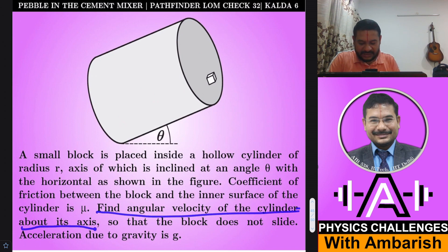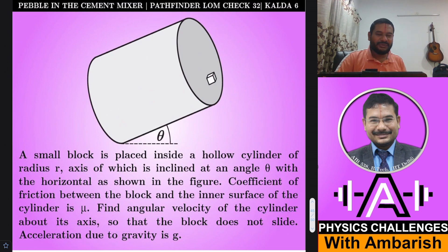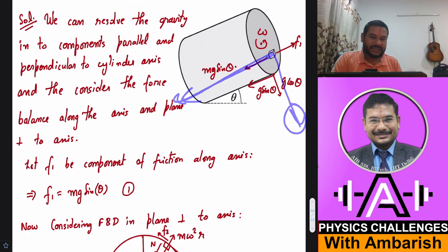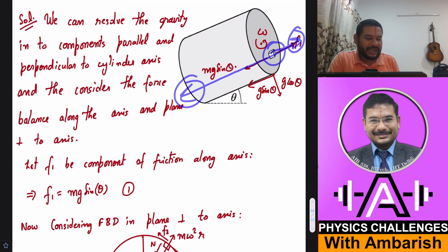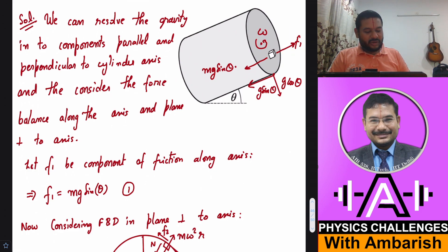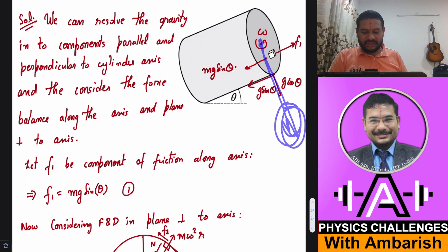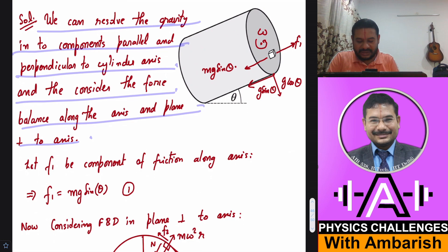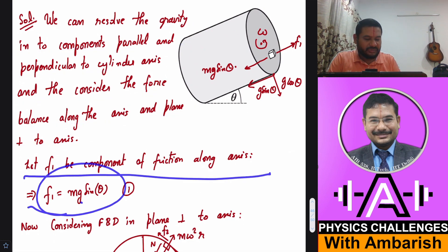Find the angular velocity of the cylinder about its axis so that the block does not slide. Acceleration due to gravity is g. We resolve gravity into two components: one parallel to the axis of the cylinder and one perpendicular to it. Since the block is not sliding along the axis, one component of friction F1 acts along the axis preventing that sliding. By force balance along the axis, F1 must equal mg sin theta.